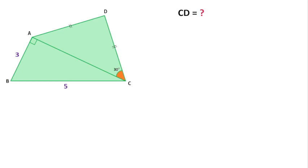Welcome to Definite Mind. In this figure, the length of AB is 3 units and the length of BC is 5 units. This angle is 30 degrees, and AD and CD are both equal. We have to find the length of CD.